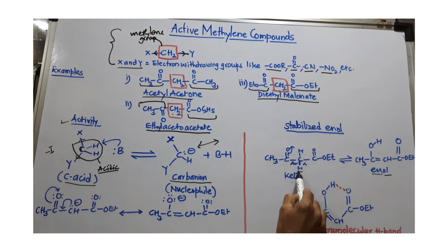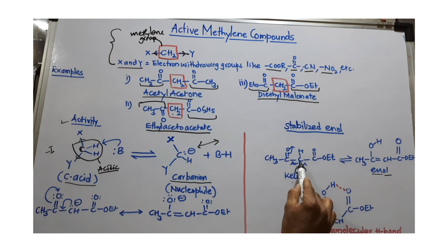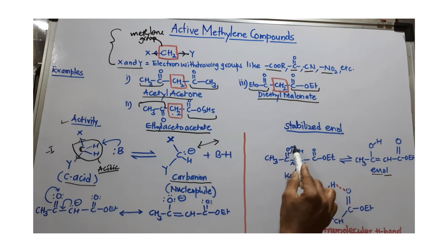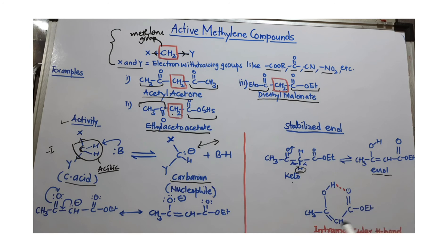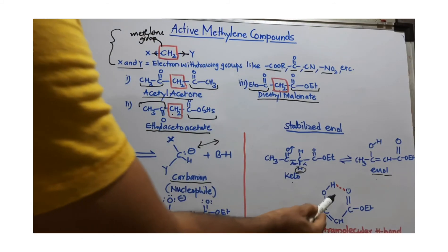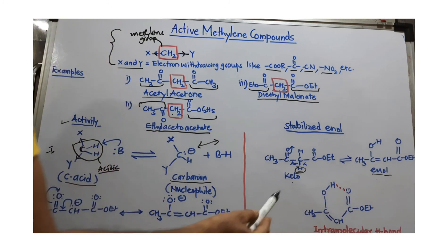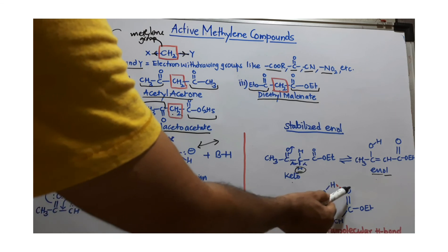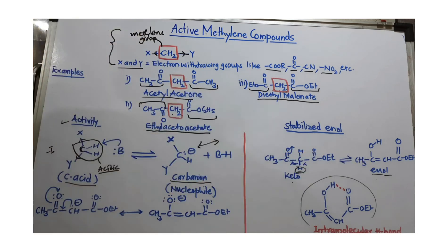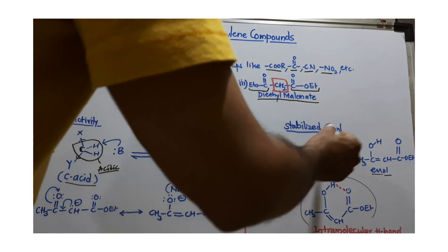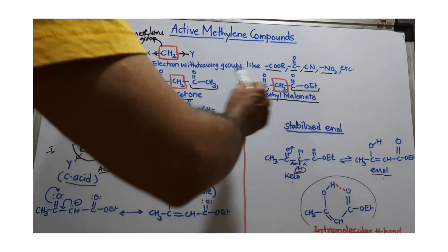In keto-enol tautomerization, an alpha hydrogen is required. The hydrogen on the alpha carbon is the alpha hydrogen. To write the enol form, remove this alpha hydrogen, form a bond between the carbonyl carbon and the alpha carbon, break the C=O bond, and join the hydrogen to the oxygen to get the OH group. In all these active methylene compounds, the enol form is more stable than the keto form. This is because intramolecular hydrogen bonding is possible in the enol form — between the H of the OH group and the O of the adjacent carbonyl group. This intramolecular hydrogen bonding stabilizes the enol form, making it the most favorable form of these active methylene compounds.